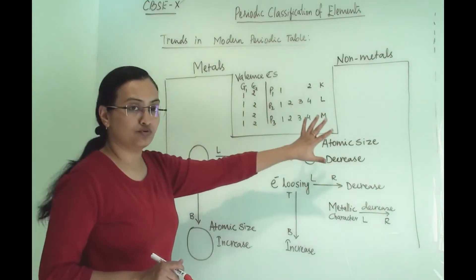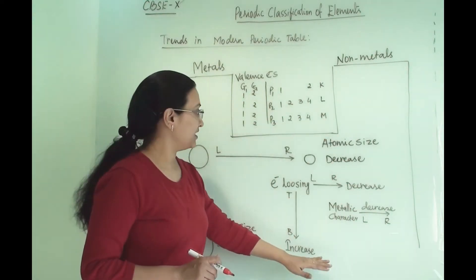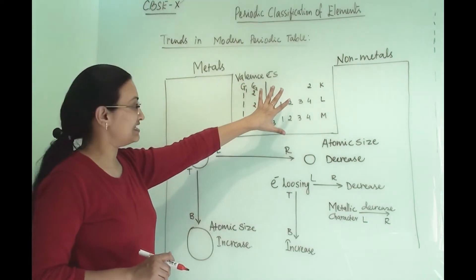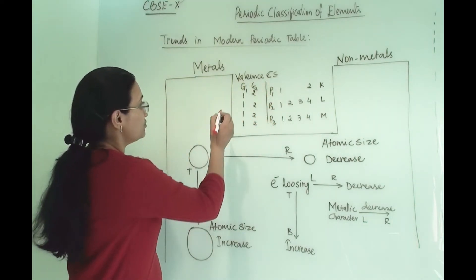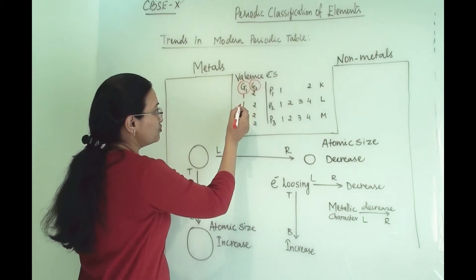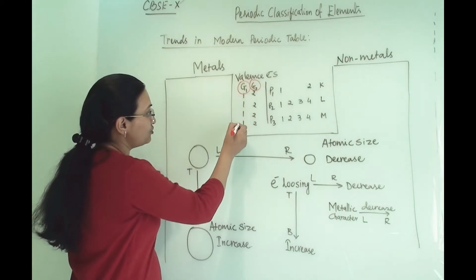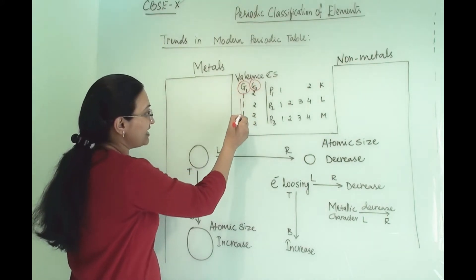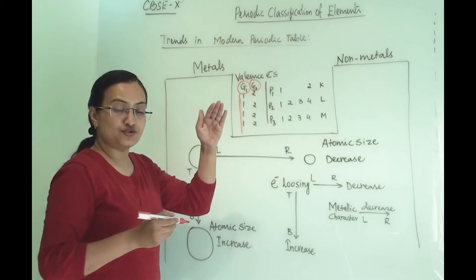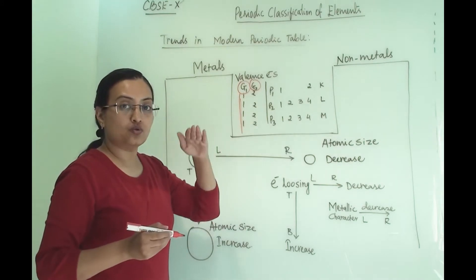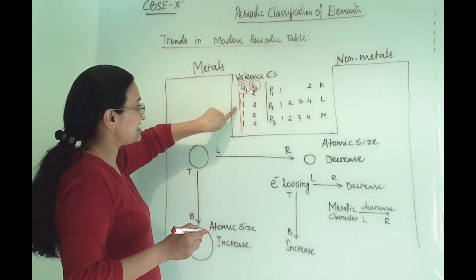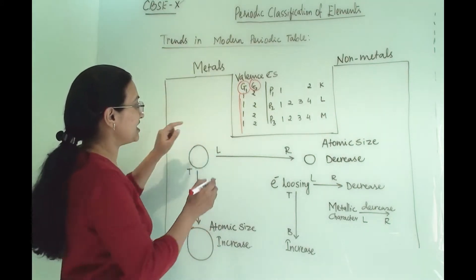Here is a flowchart I have made. These points are for valence electrons. These are group 1 and group 2. So across the group, the valence electron will remain the same. As you go down, one orbital will increase but the valence electron will remain the same.